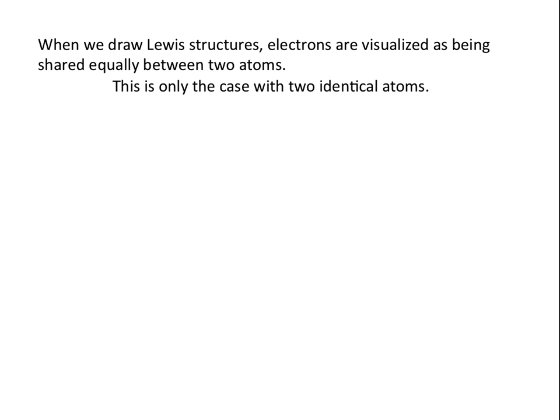This is only the case with two identical atoms. Oftentimes electrons are shared unequally, and that's because different elements differ in their electronegativities, or their tendency to attract electrons in a bond towards them. The more electronegative an atom is, the greater pull that atom will have on the shared electrons in a bond.